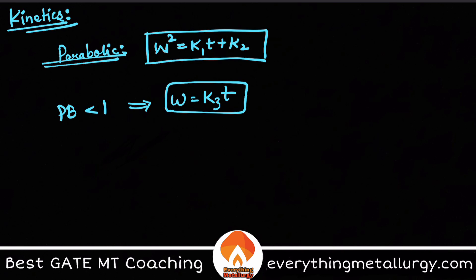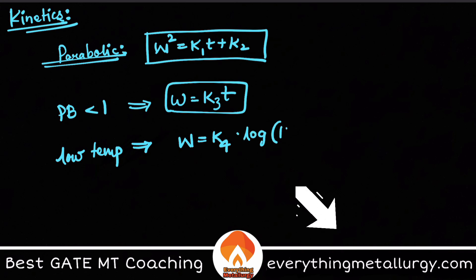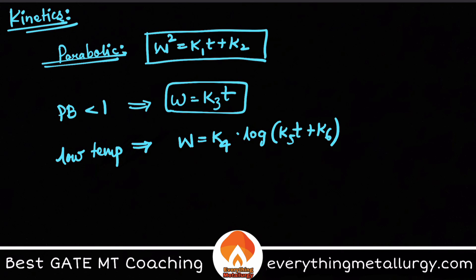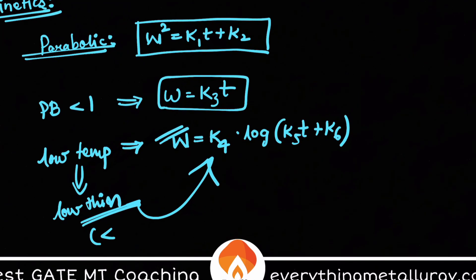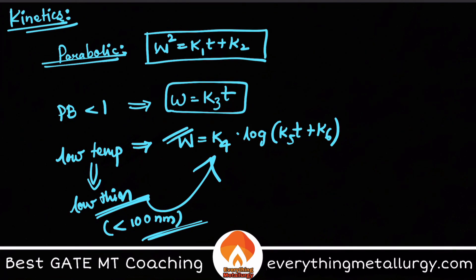You can also get a logarithmic relationship when talking about lower temperatures. These are different kinetic ways to study oxidation, where k₁, k₂, etc. are constants. The logarithmic relation is the reaction rate law for low temperatures or very low thicknesses — typically less than 100 nanometers. In the ideal case, oxidation follows the parabolic law.